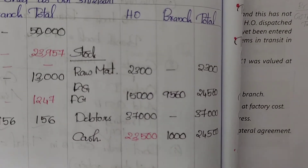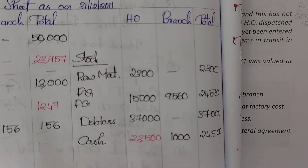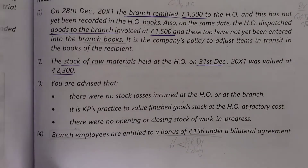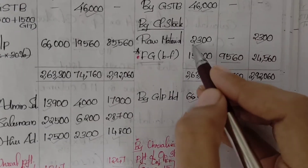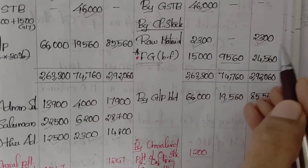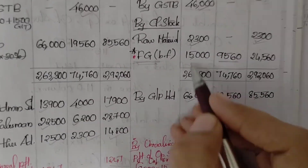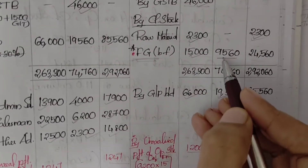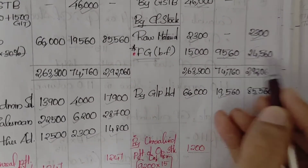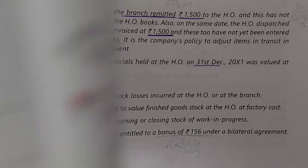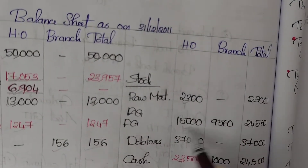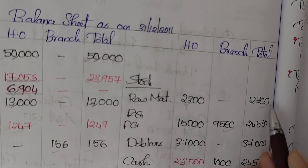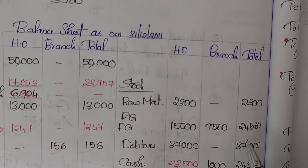On the asset side, closing stocks: raw materials closing stock is 2300, finished goods closing stock is 15956 for head office and 9560 for branch, total finished goods 24560. So raw materials plus finished goods make up the total closing stock figure.